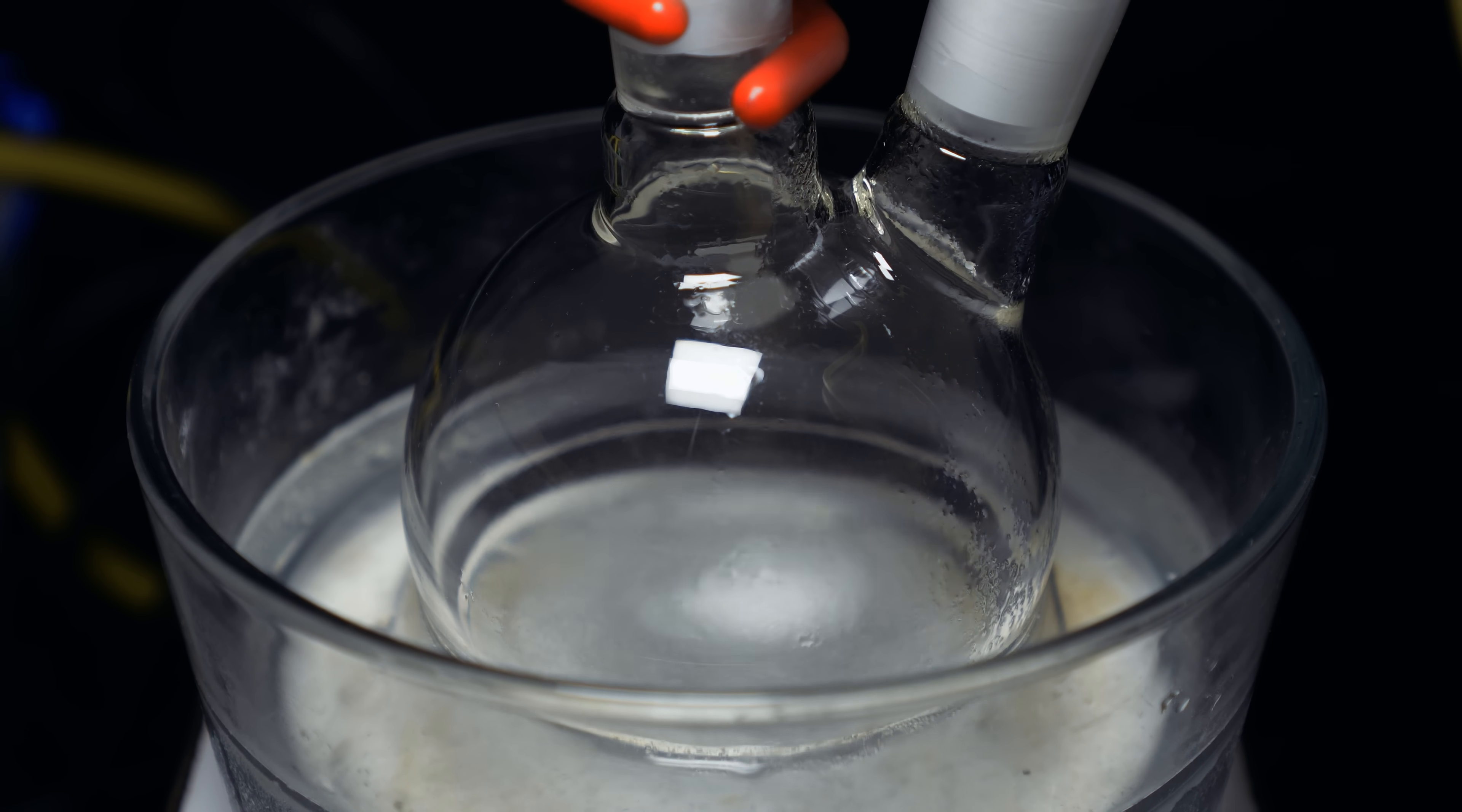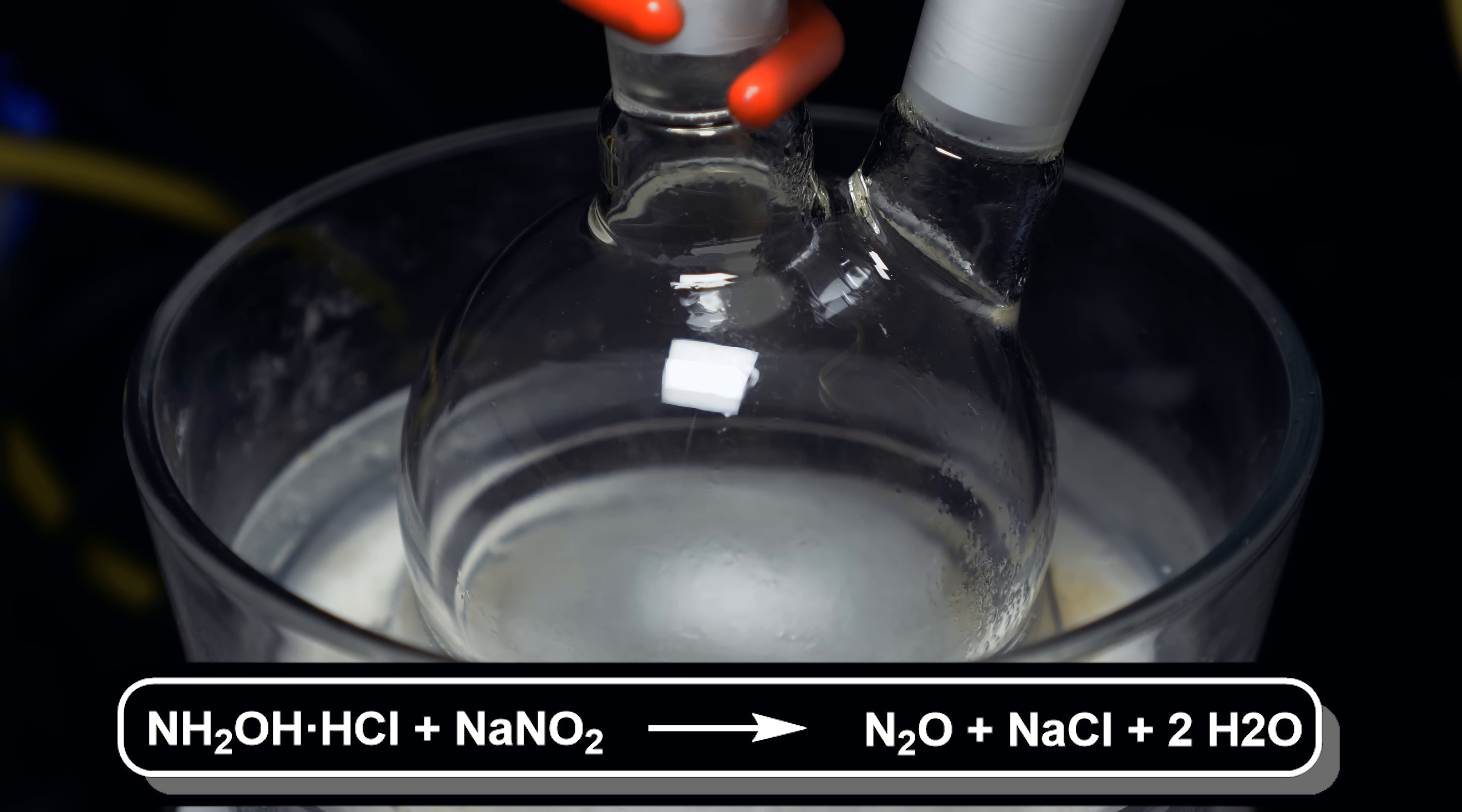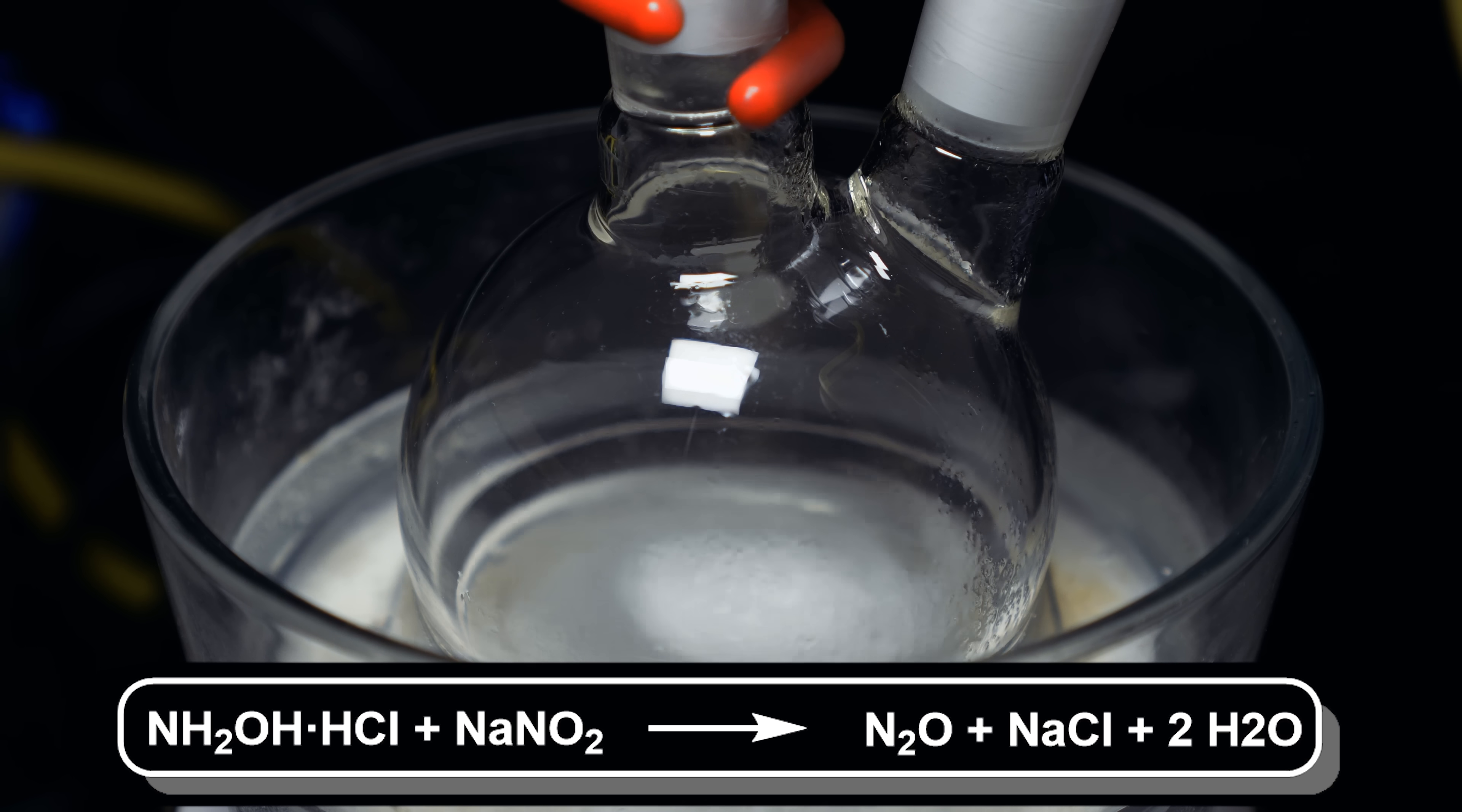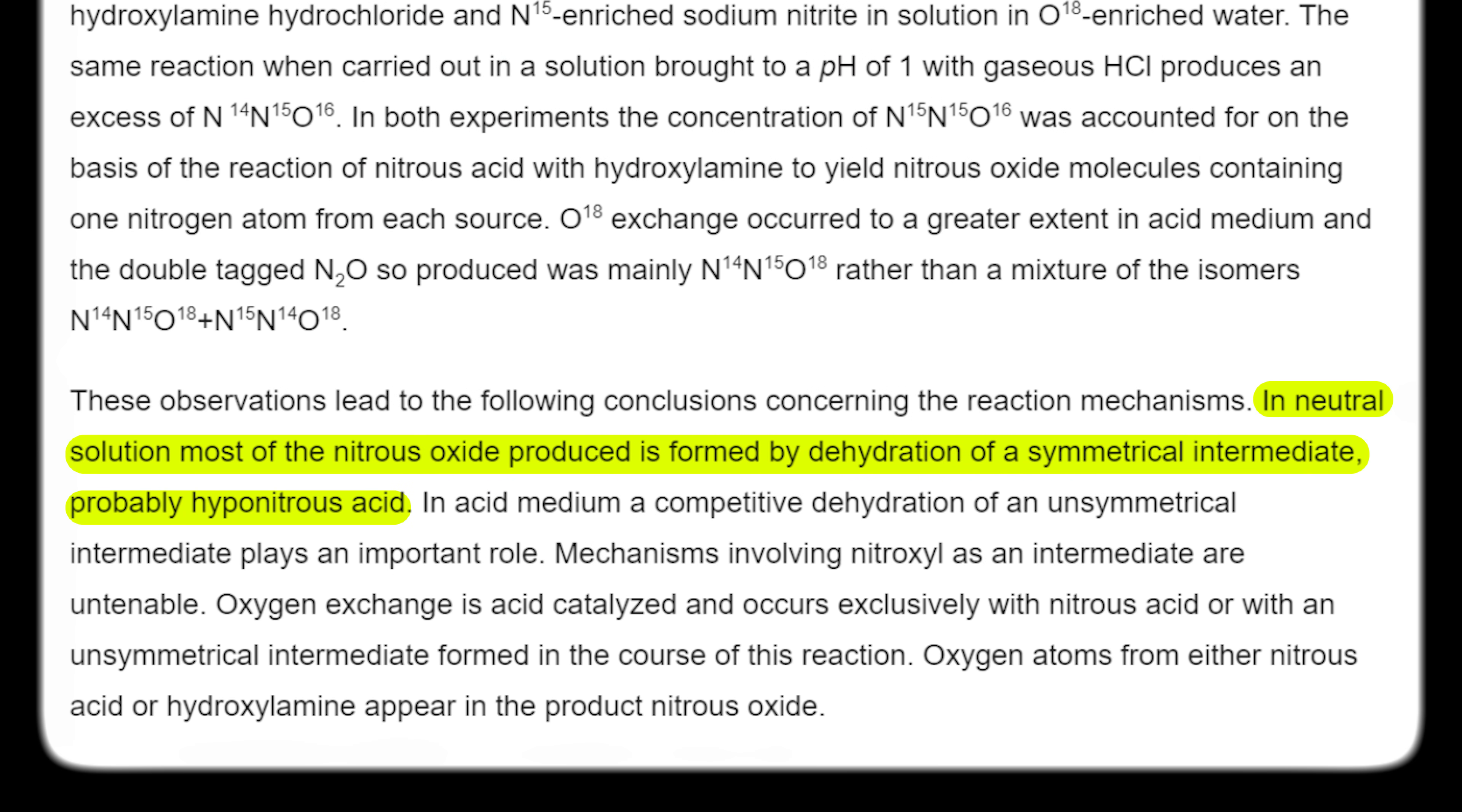Now, let's explain what's happening in this reaction. When the two solutions meet, hydroxylamine hydrochloride will react with sodium nitrite through a redox mechanism where hydroxylamine acts as a reducing agent and nitrous acid, which is formed from the sodium nitrite, as the oxidizing agent. This reaction produces nitrous oxide, sodium chloride, and water. In neutral conditions, which is likely our scenario, most of the nitrous oxide will form from the dehydration of a symmetrical intermediate, which is likely hyponitrous acid. I also did not know this at the top of my head, so when I looked up this paper, I found that it likely was from the dehydration of a symmetrical intermediate. I don't know if this is exactly how it works, but it's kind of a shot in the right direction.